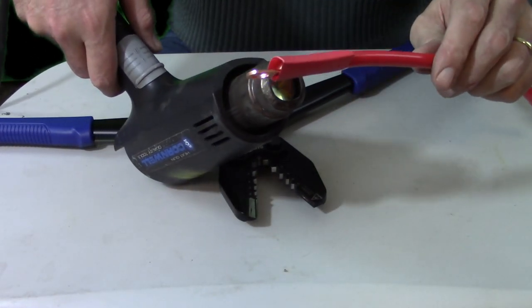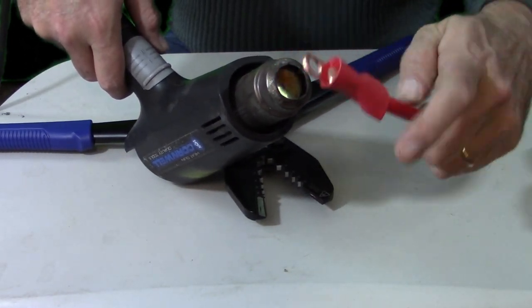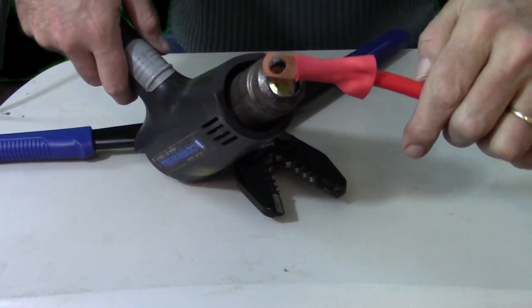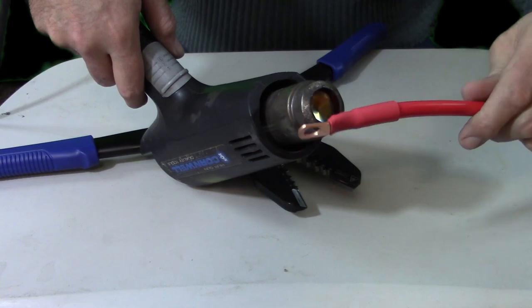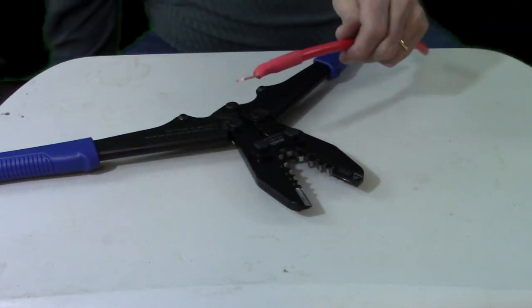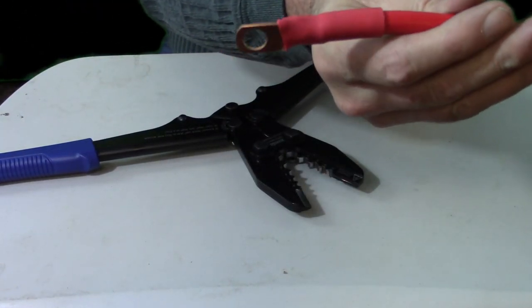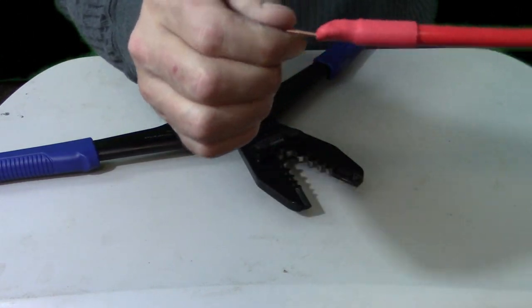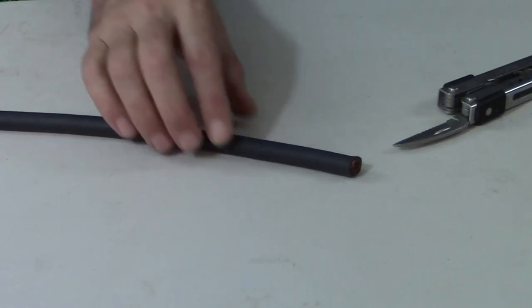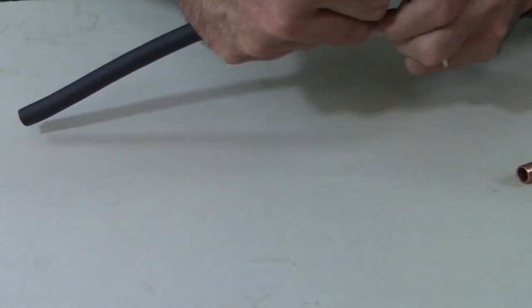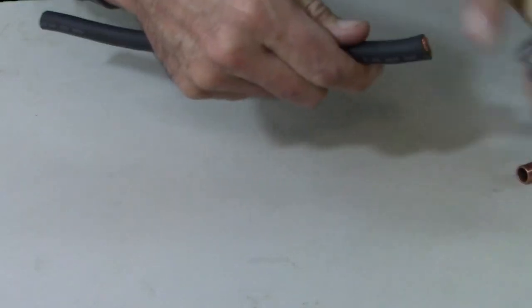The way the crimps work, it kind of stretches as it crimps down. Again, this heat shrink tubing here that I've got has got an adhesive on it. So as it does heat up, that liquefies. And you can see right there, it oozes out, creates a water seal.